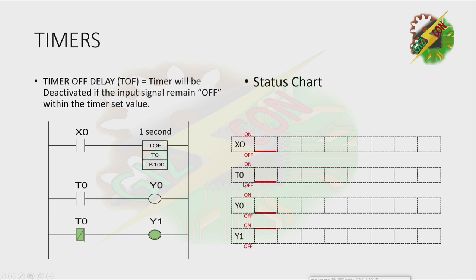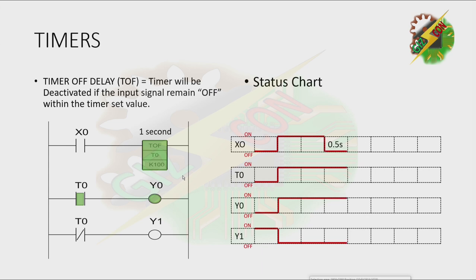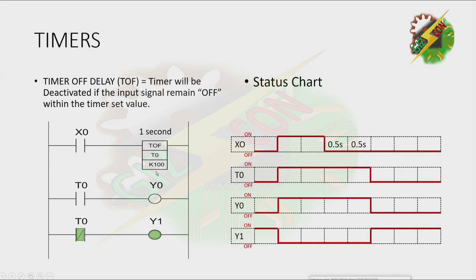X0 is initially off, T0 is initially off, Y0 is initially off, and Y1 is initially on. Now let's turn on X0. Because this is a timer off delay, it will immediately be activated, causing Y0 to turn on and Y1 to turn off. Now let's release X0, and after one second the timer will be deactivated, causing Y0 to turn off and Y1 to turn on. As you can see, the deactivation of the timer is delayed by one second, because one second is our timer set value.